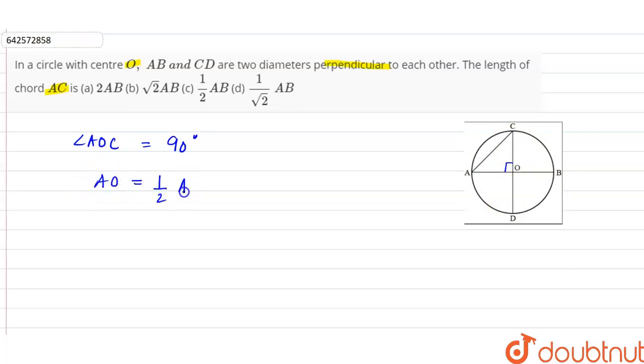...half of AB, is half of AB. So we can say from here that if AO is half of AB, and AO is equal to OC, reason: they are the radius of the circle.